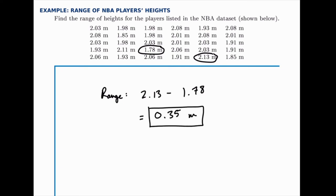That's a really simple way of measuring how spread out the data is. If the range is larger, it's more spread out. If the range is smaller, it's more tightly clustered together. So 0.35, when compared to the values in this data set, is a fairly small range — so they're fairly tightly clustered together.